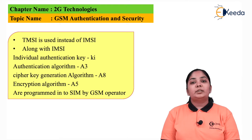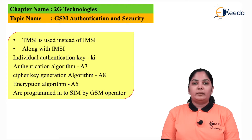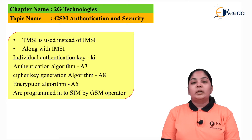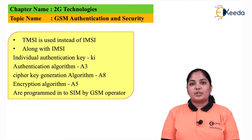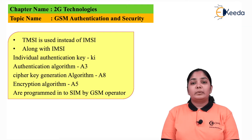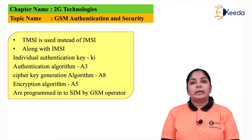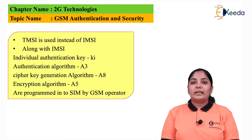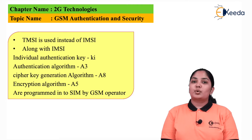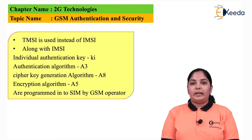The IMSI number is incorporated into the SIM card by the operator at the time of service provisioning. Along with the IMSI number, other information is stored such as the authentication key KI, encryption algorithm A5, cipher key generation algorithm A8, and authentication algorithm A3. All this information is stored in the SIM at the time of service provisioning.